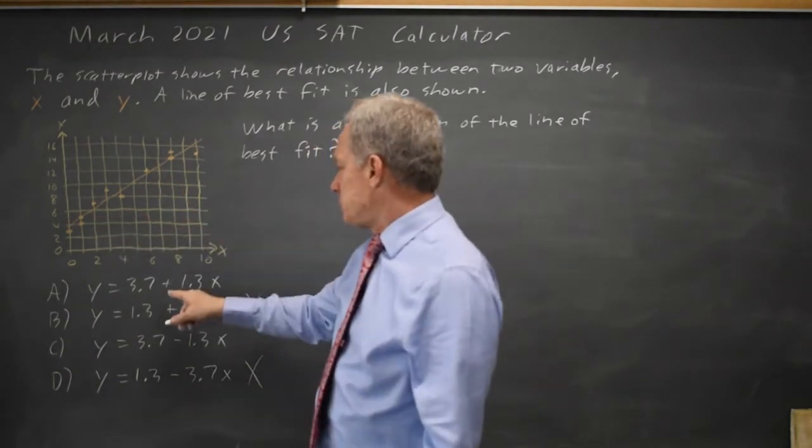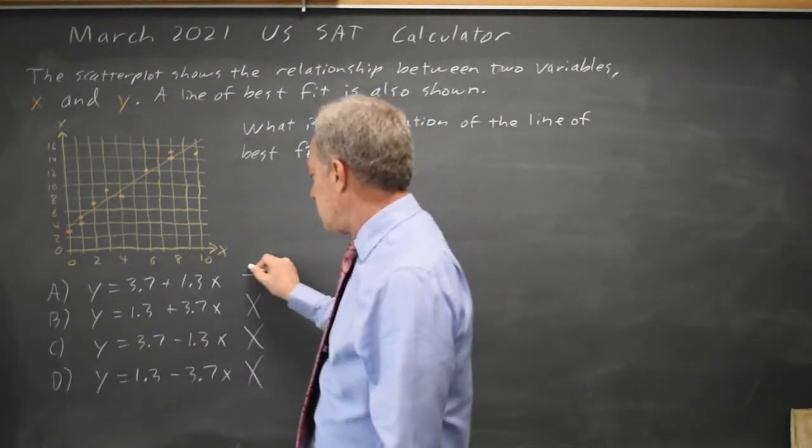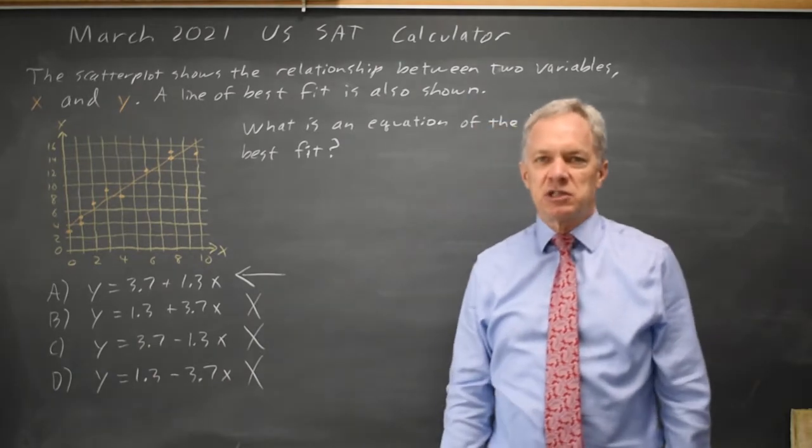The slope here is positive. Choice A has a positive slope. Choice C has a negative slope, so if C is wrong, the only possible answer would be choice A.